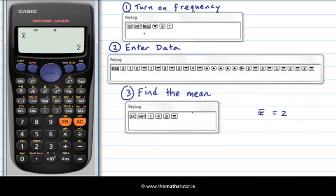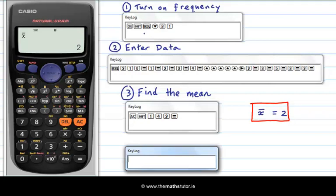So this is the mean here, how to find it. And I have written that X bar is equal to two. And now we find the standard deviation. So again we clear the data. That's AC for all clear.